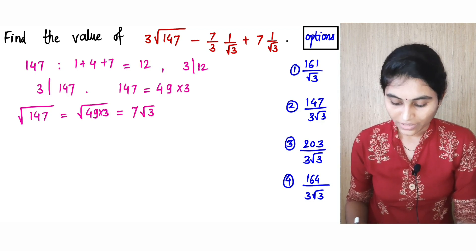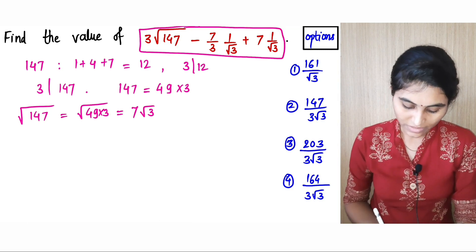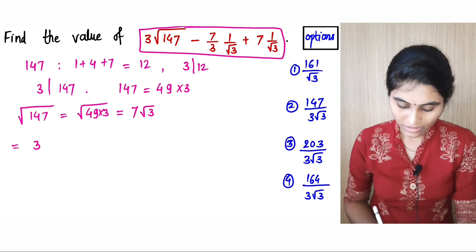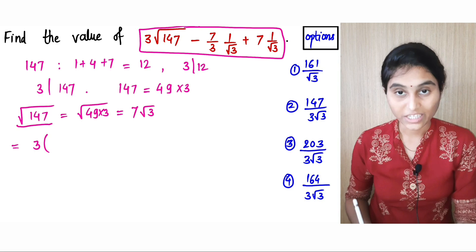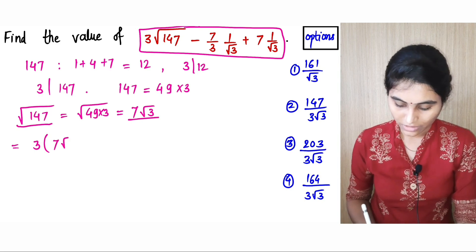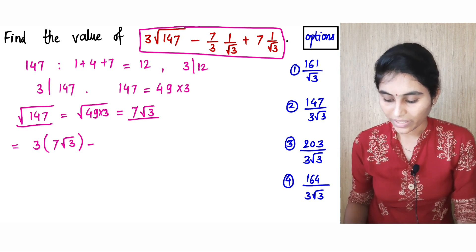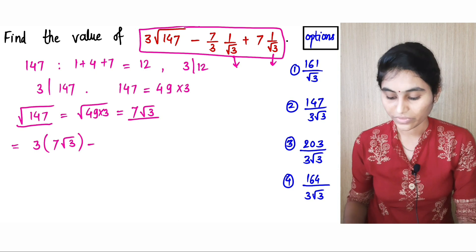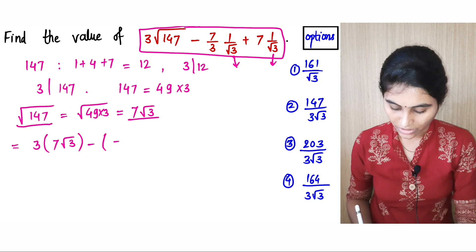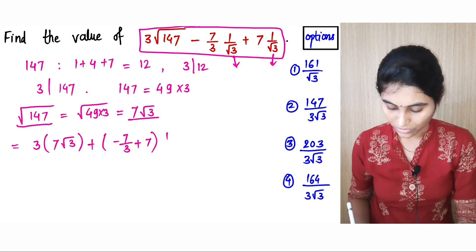Let us simplify this expression. This expression is equal to 3 times root 147, which is 7 times root 3. Now this 1 by root 3 and this 1 by root 3 are common, so you can take 1 by root 3 common, and this gives us minus 7 by 3 plus 7 times 1 by root 3.